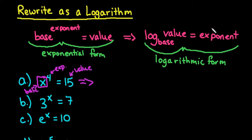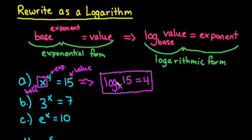So all you would do is substitute that into here. So we would have log base x of the value 15 equals the exponent 4. And that would be our final answer because all we're doing is rewriting it in logarithmic form. We're not solving it. We're not doing anything else.